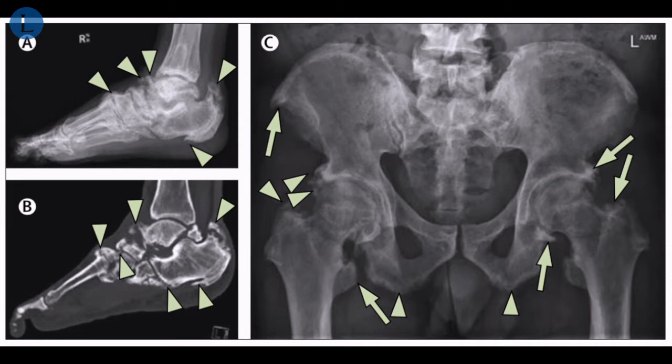In this example, the striking enthesopathy is caused by X-linked hyperphosphatemia. This patient was diagnosed with X-linked hyperphosphatemia in childhood, following a known family history with his mother similarly afflicted. In adulthood, he developed chronic pain to the foot and ankle, prompting referral to the rheumatology service.